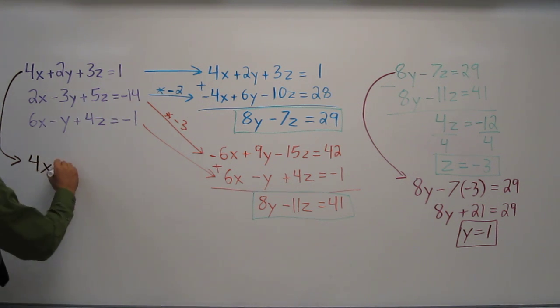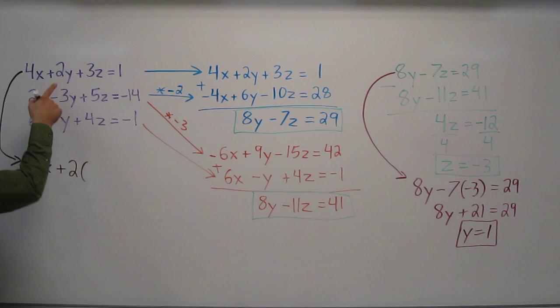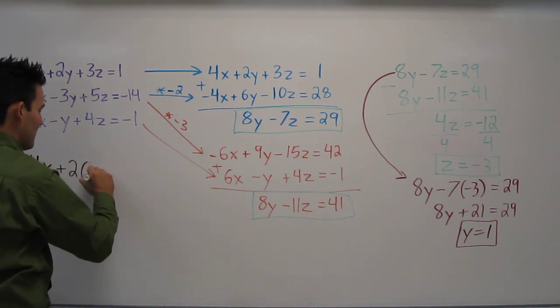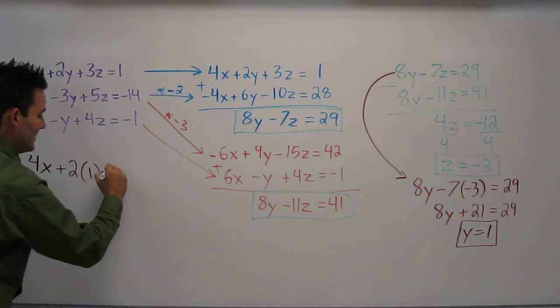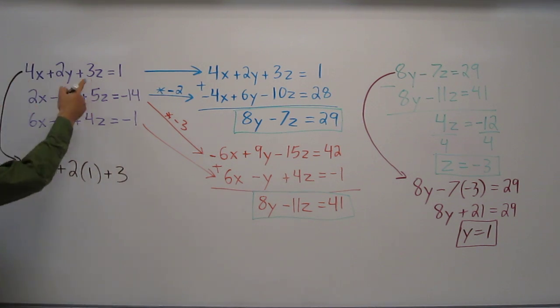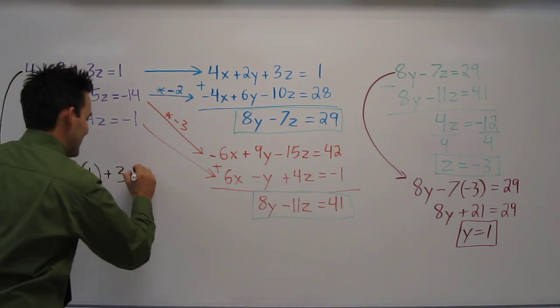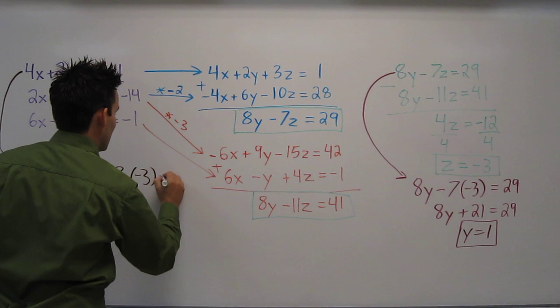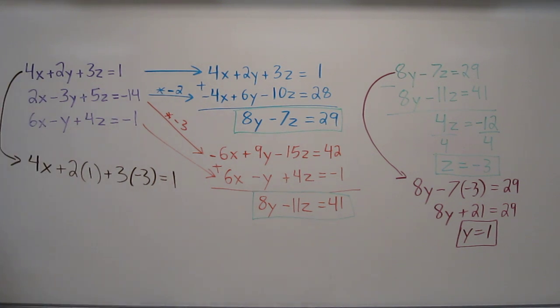4x plus 2, and instead of writing y, I'm going to write 1 plus 3z. But instead of writing z, I'm going to write negative 3. And that all equals 1.